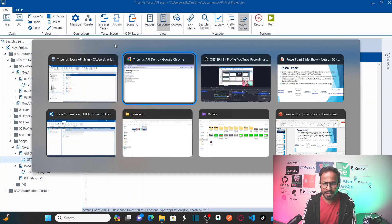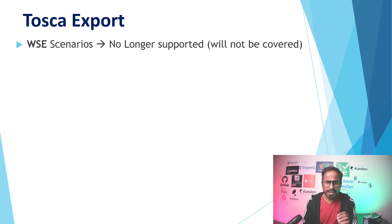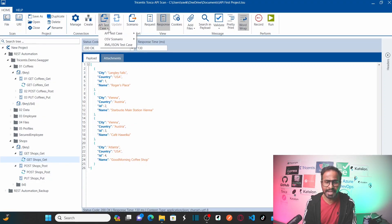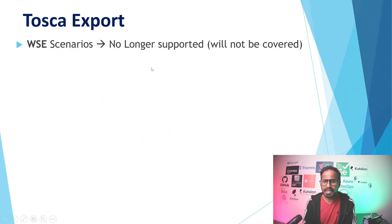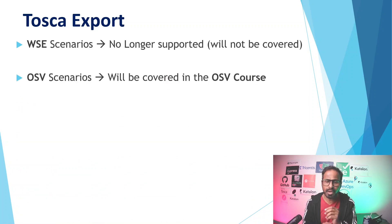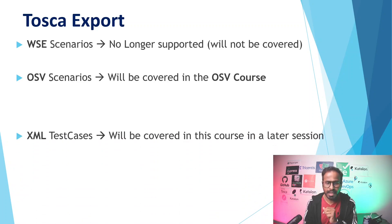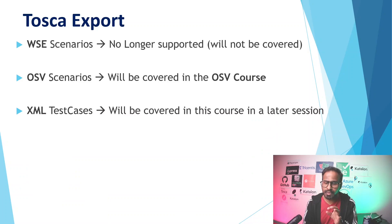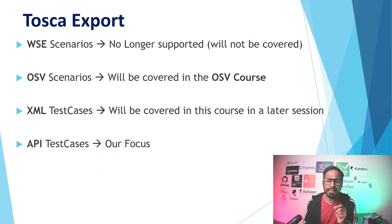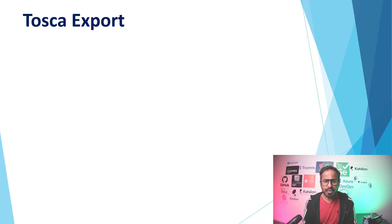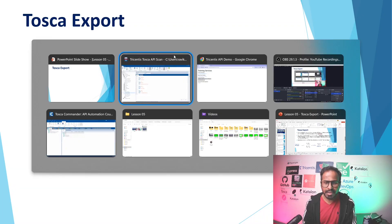Let me go back to my slide. You can see the WAC scenarios option — this particular option is not available in the latest version, meaning it is no longer supported by Tricentis Tosca. There is also OAC scenarios, which will be covered in an OAC-related course. And then XML or JSON test cases, which will be covered in a later session. For this session our focus is the API test case option.